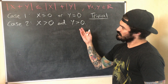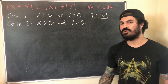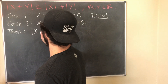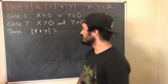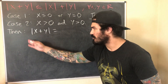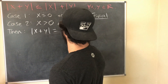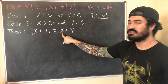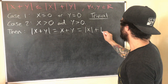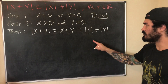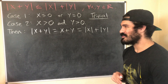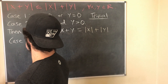Case 2: x > 0 and y > 0. This tells us x + y > 0. So |x + y| = x + y. Since x is positive, x = |x|; since y is positive, y = |y|. Therefore |x + y| = x + y = |x| + |y|, which proves the triangle inequality for this case.